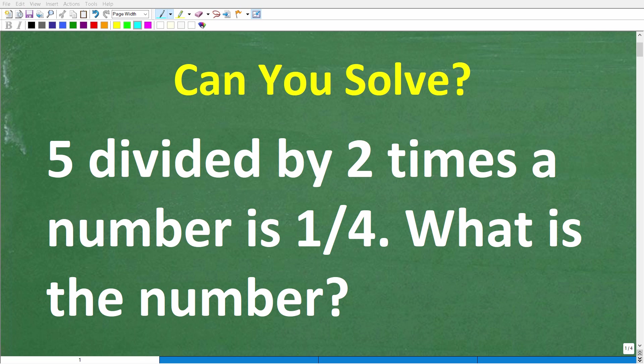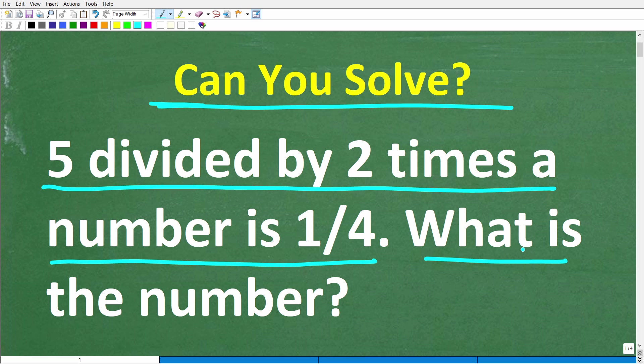Alright, so let's see if you can figure out how to solve this simple math problem. Let me go ahead and read the problem. It is the following: 5 divided by 2 times a number is 1 fourth. What is the number?